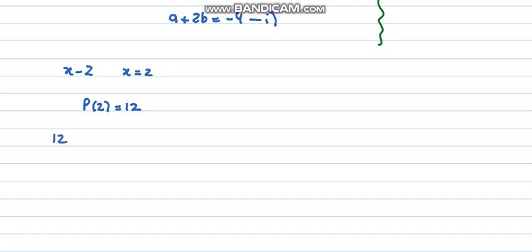So just plug in the values: 12 equals a(2)³ + b(2)² + 5(2) - 2. That would give me a final answer as 8a + 4b equals 4.